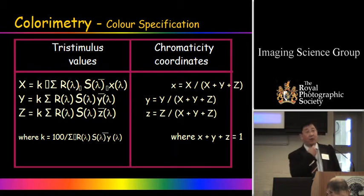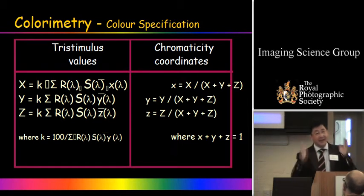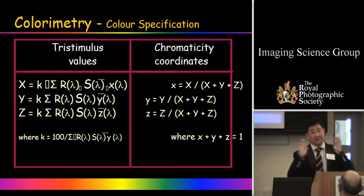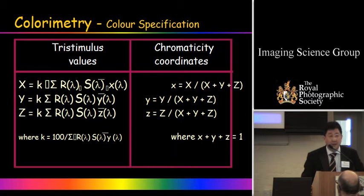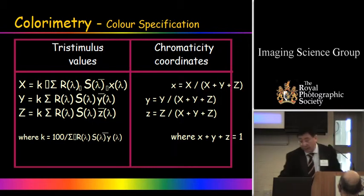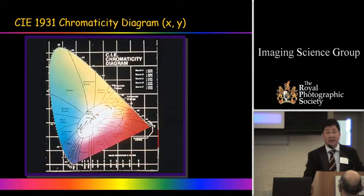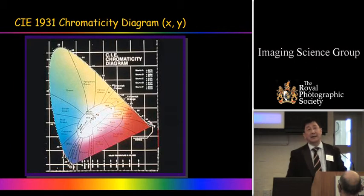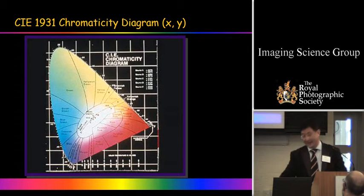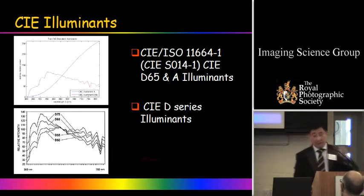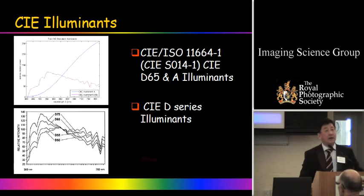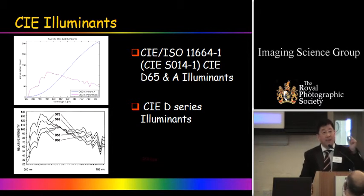I'd like to give you a summary of what CIE recommends. The first thing is CIE illuminants. We have light sources — physical bodies emitting light. Illuminant means we measure using a spectroradiometer and get a numerical definition of the illuminant. People ask: how many CIE standard illuminants are there? Strictly speaking, we have two — D65 and Illuminant A.